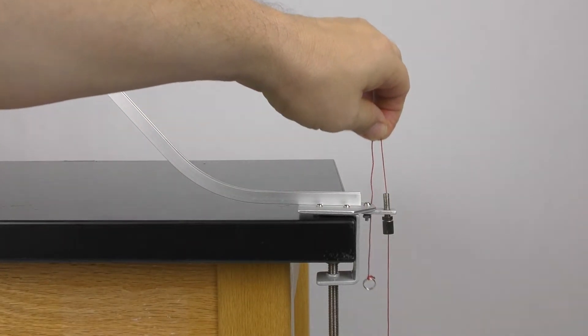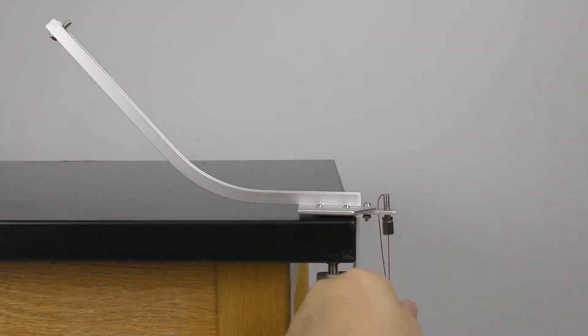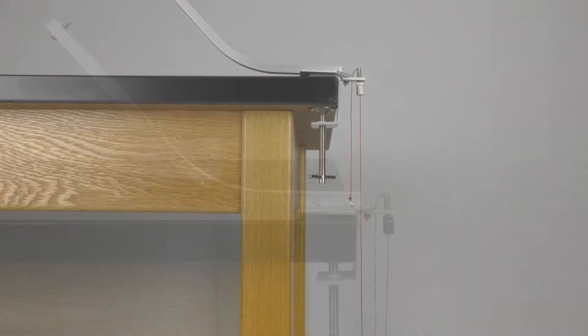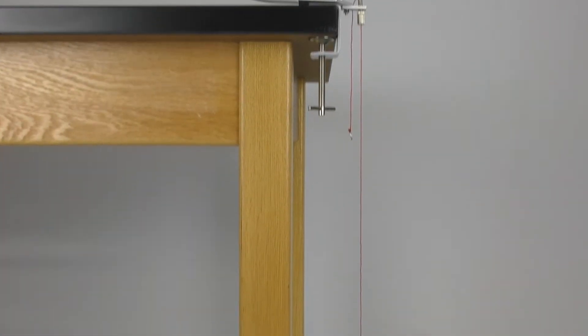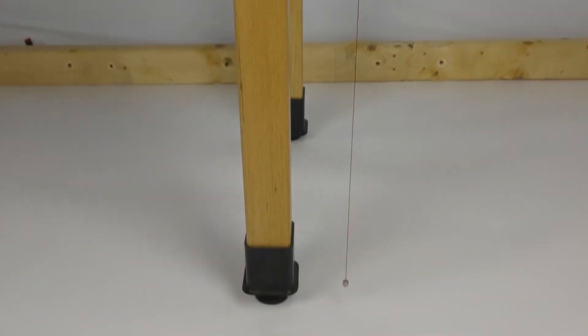This sits directly on the mount that you put the ball on, and you can adjust the length very easily so that the pendulum bob is hanging freely directly below the ball so you can measure the horizontal range.